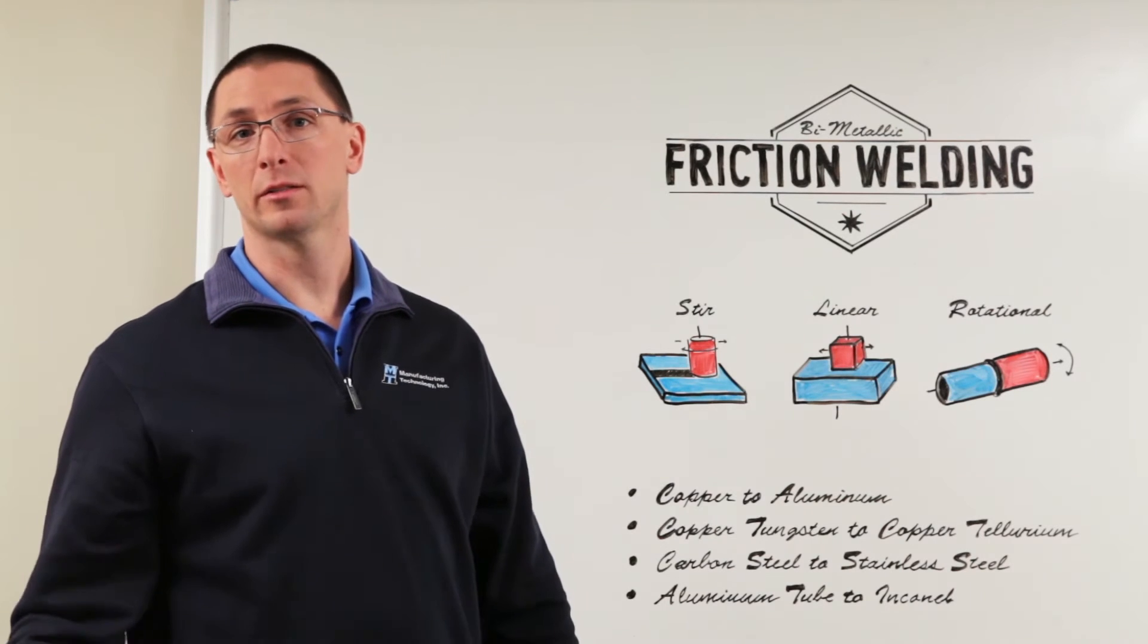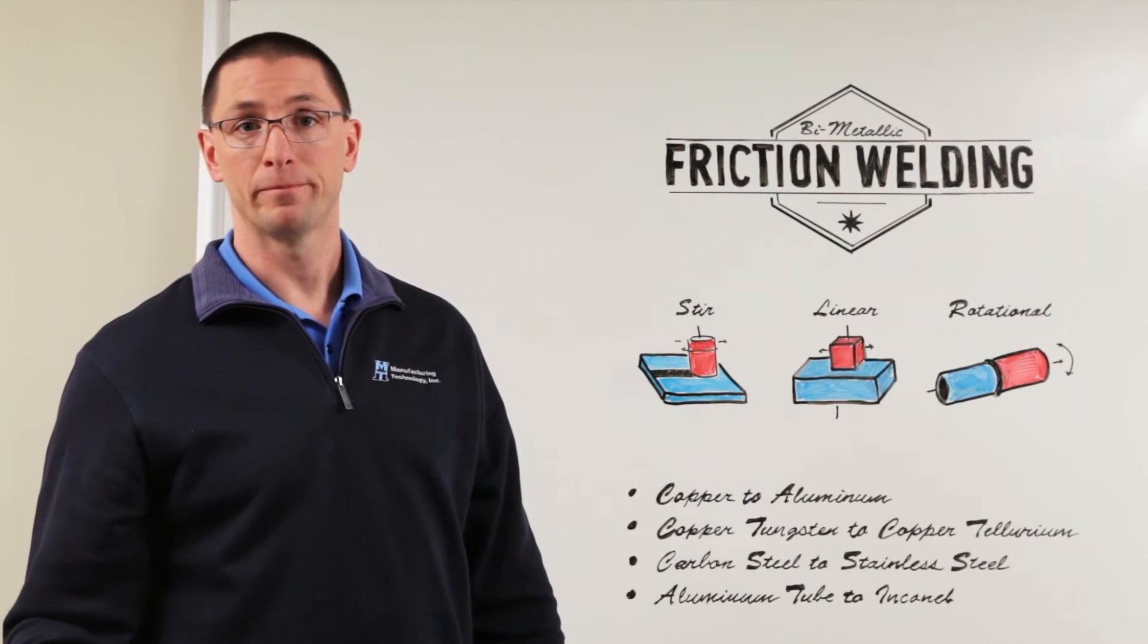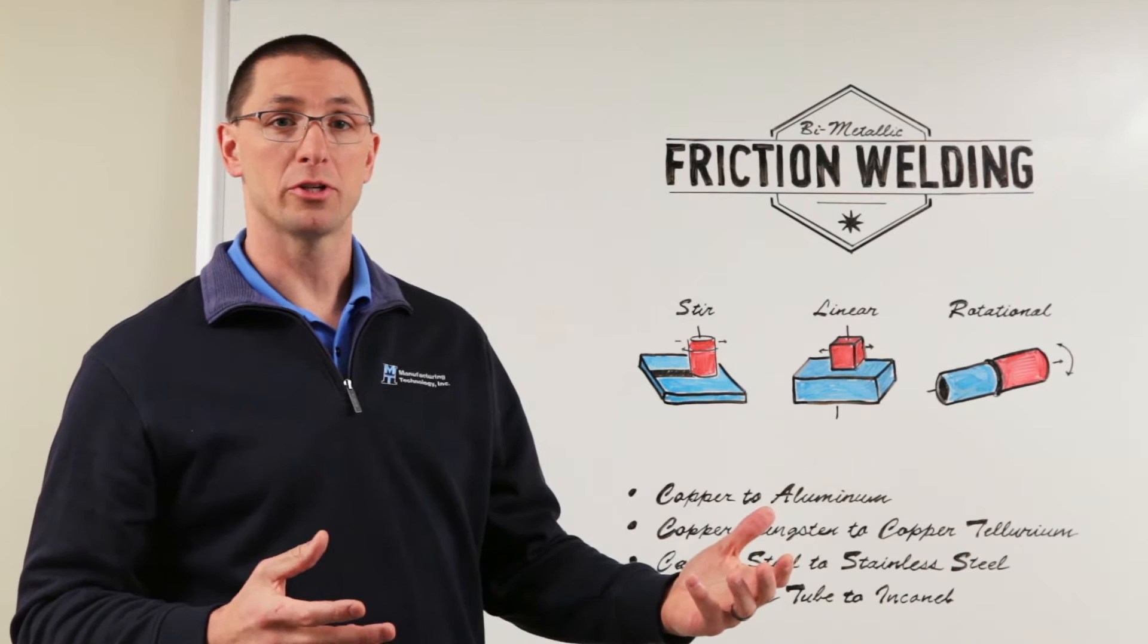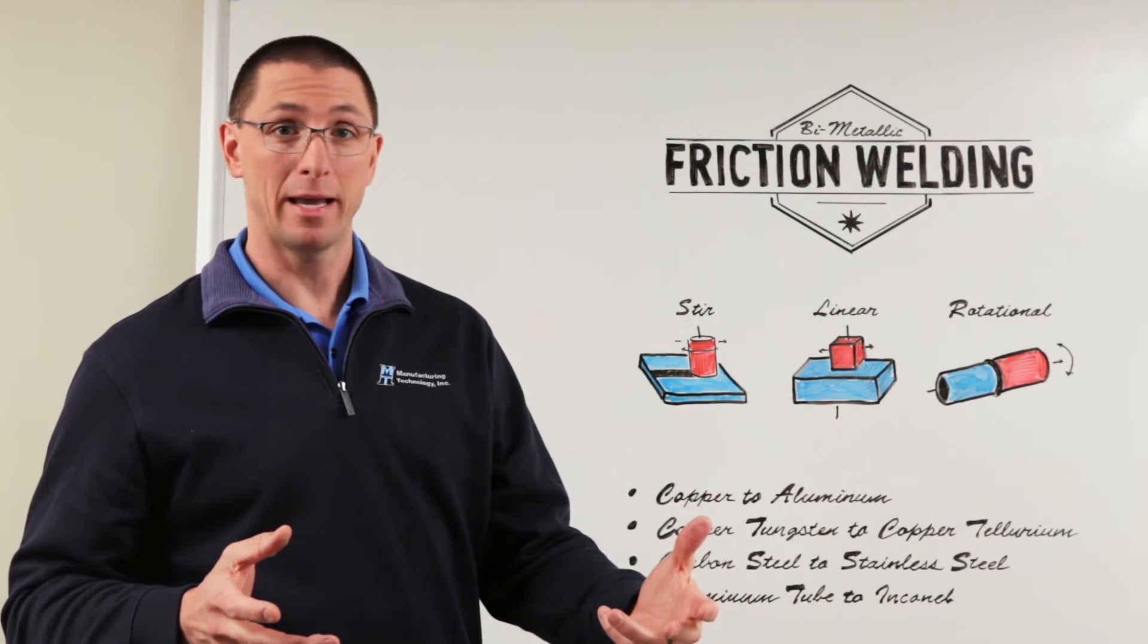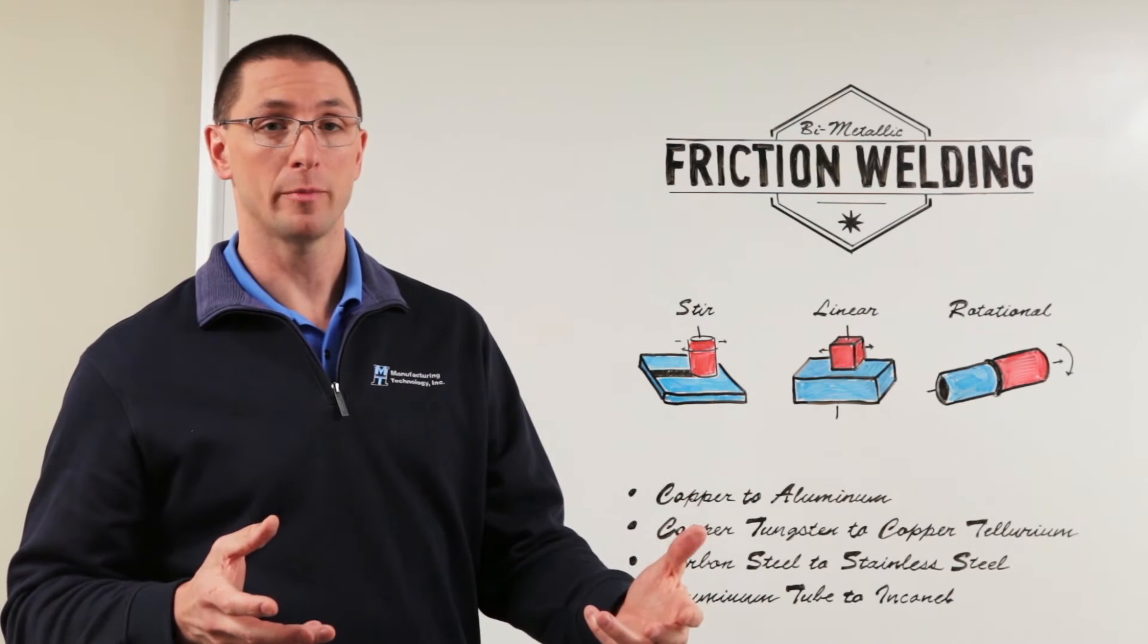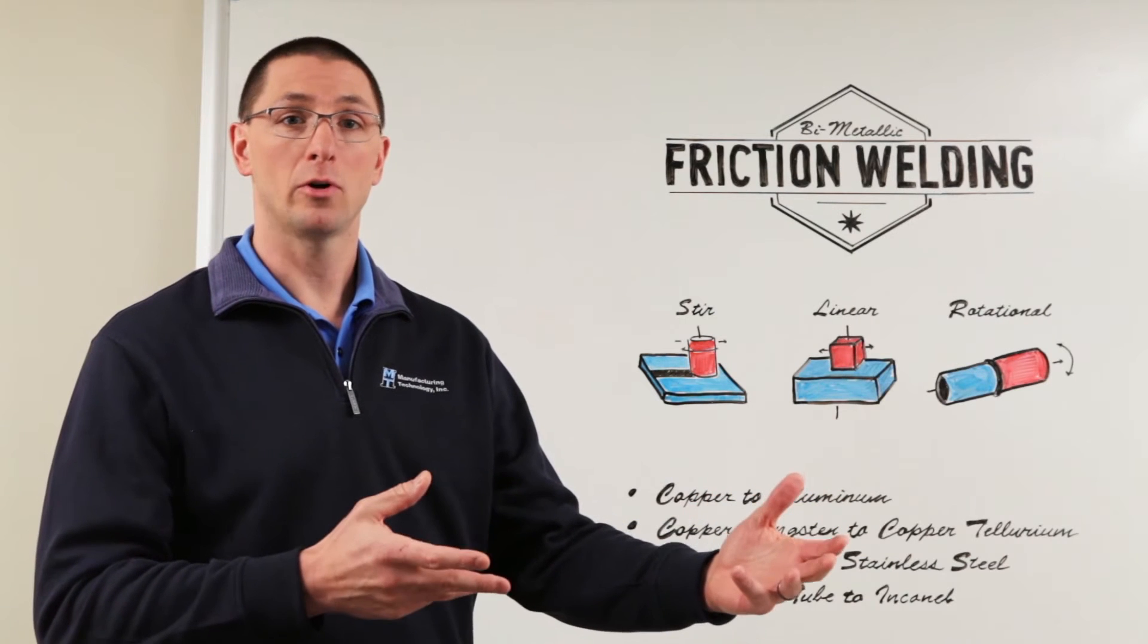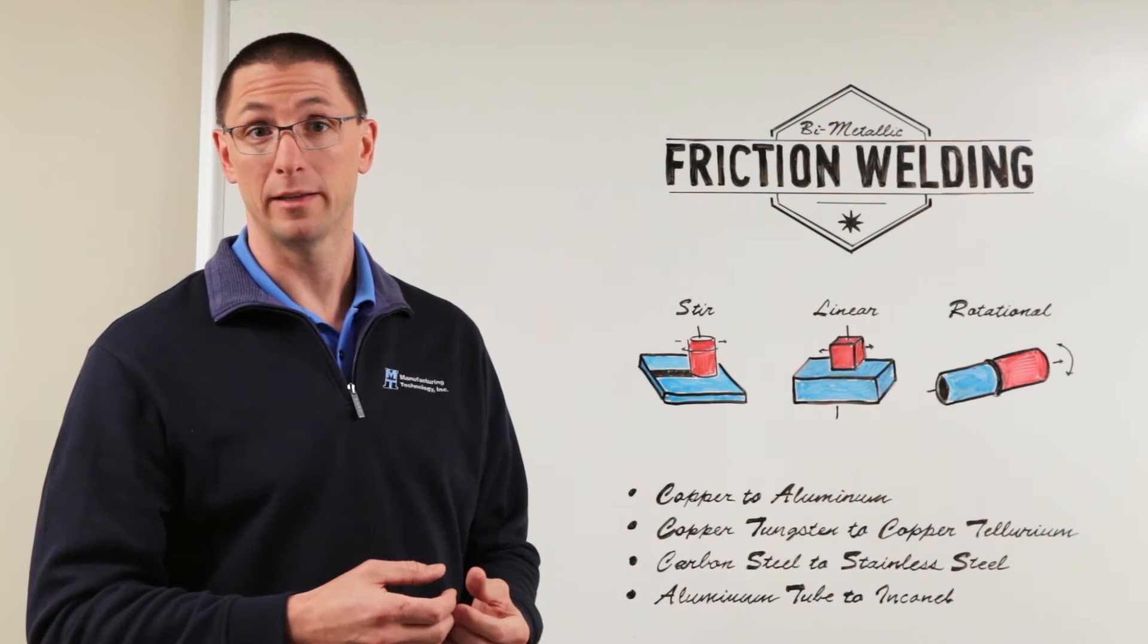Another example might be a submersible motor pump where you have a bimetallic motor shaft. You need the magnetic properties of a carbon steel but you need the corrosive resistance properties of a stainless steel.